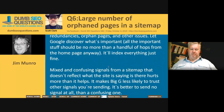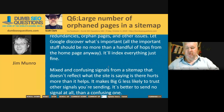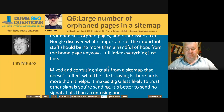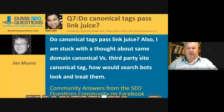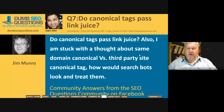That question has a lot of useful community comments in the Dumb SEO Questions Facebook group worth reviewing. The next question, from Joven John, is titled 'Do canonical tags pass link juice?' He also asked about same-domain canonical versus third-party canonical tags, and how search bots look at and treat them.